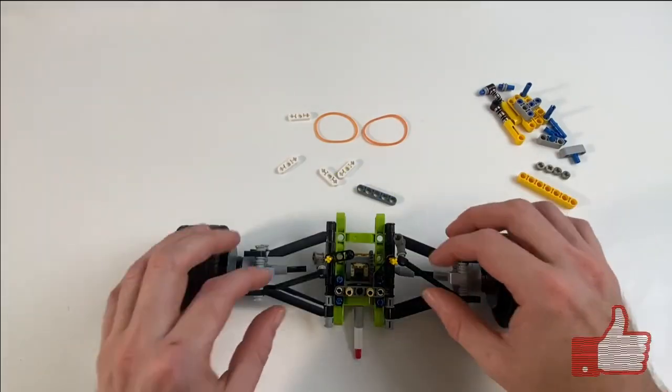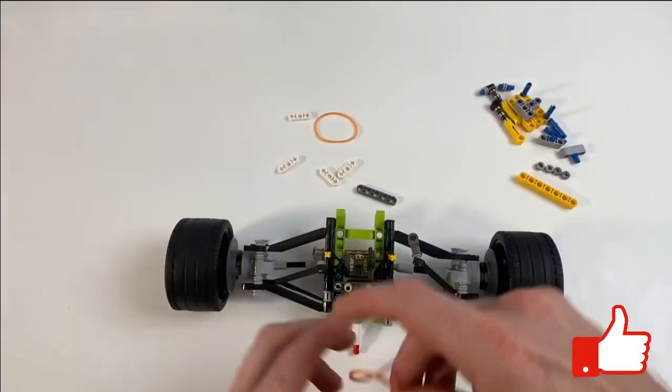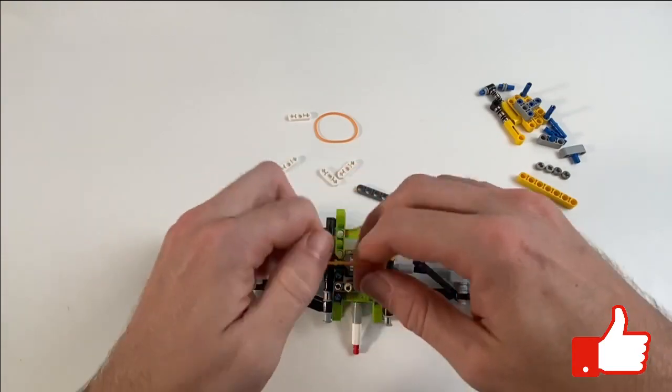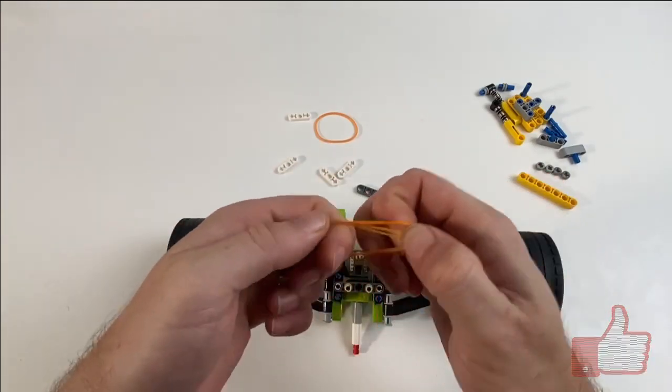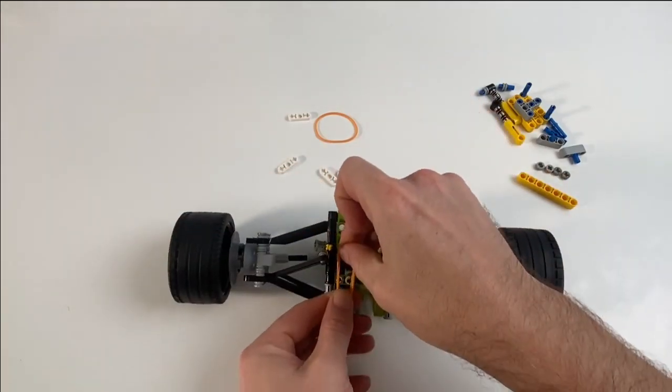Also when taking these things off here you can see some of the bushes popping off of the end of the wheel hubs there.